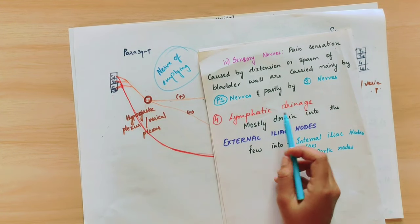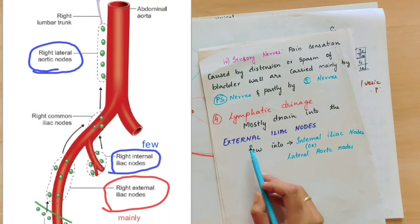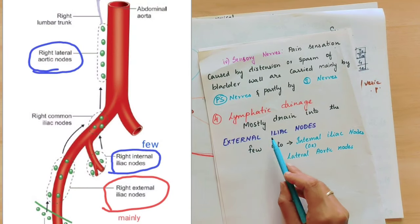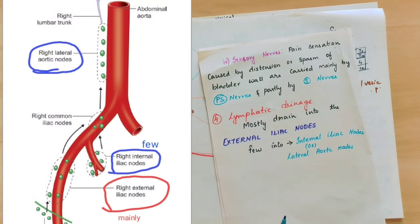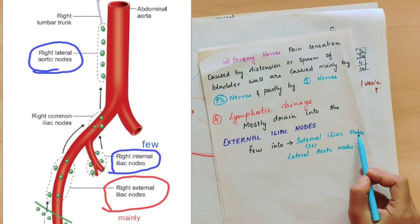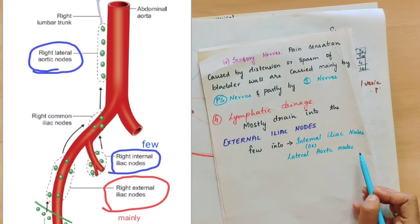Now coming to the lymphatic drainage. The urinary bladder drains into the external iliac nodes, but it will also drain into the internal iliac nodes and lateral aortic nodes.